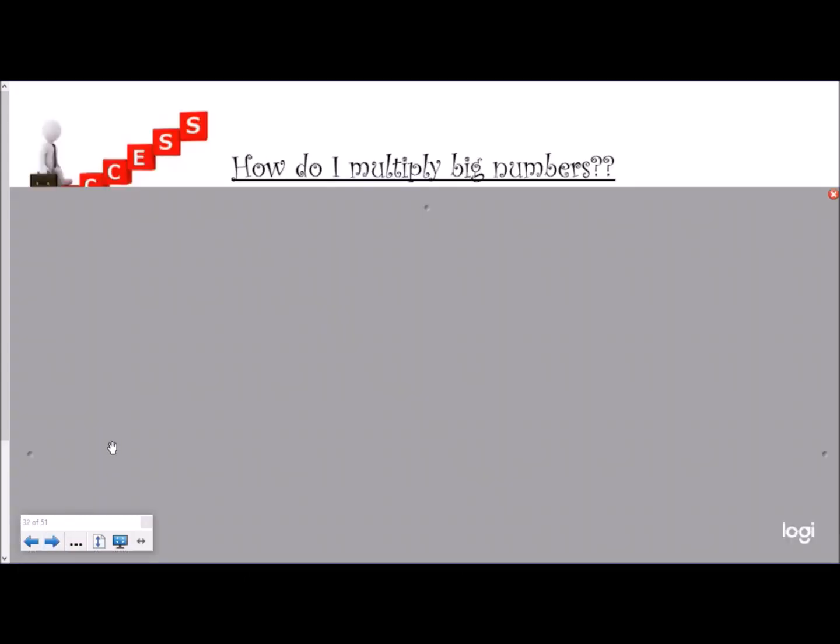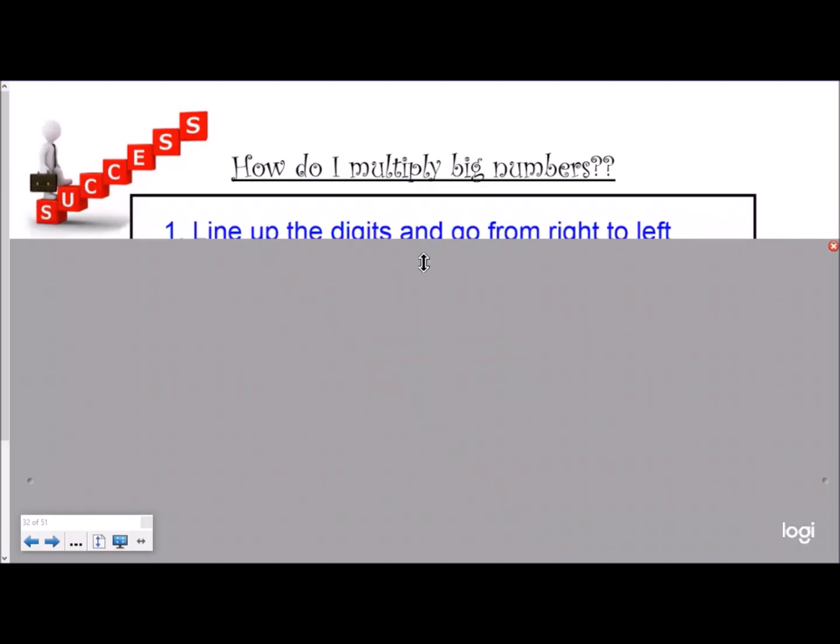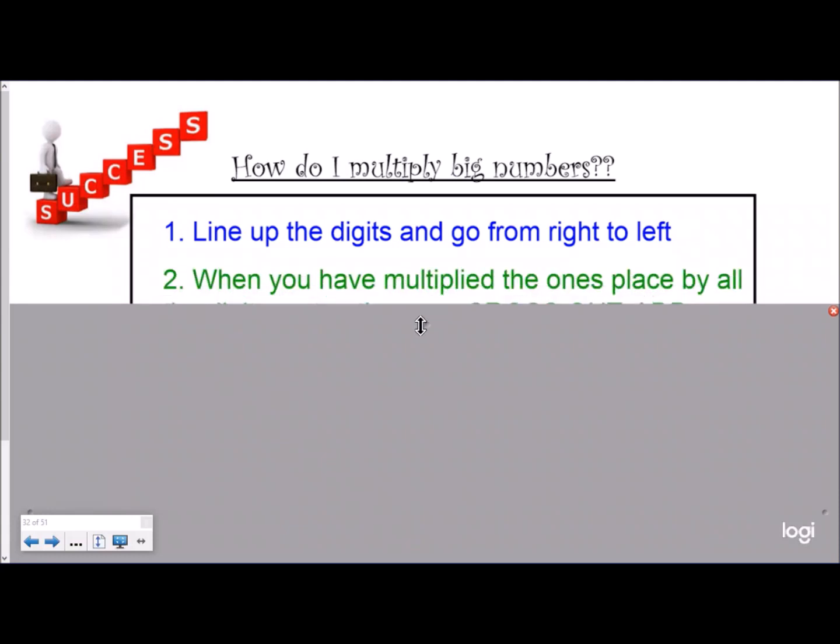We went over these steps in our last video, but we're going to use the same steps. How do I multiply big numbers? First you line up the digits and go from right to left.